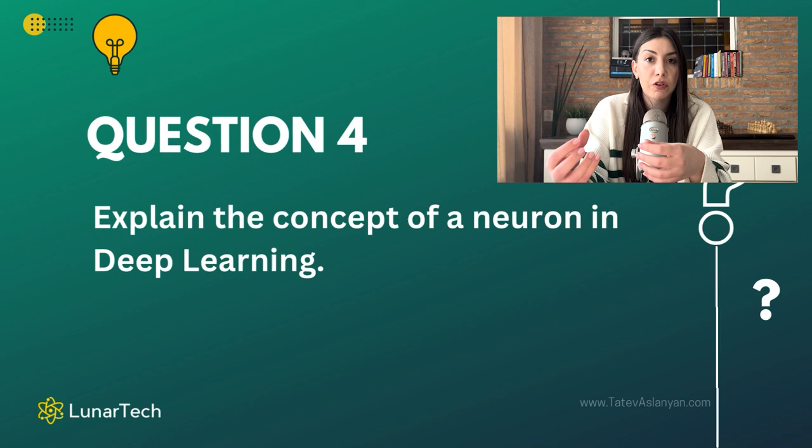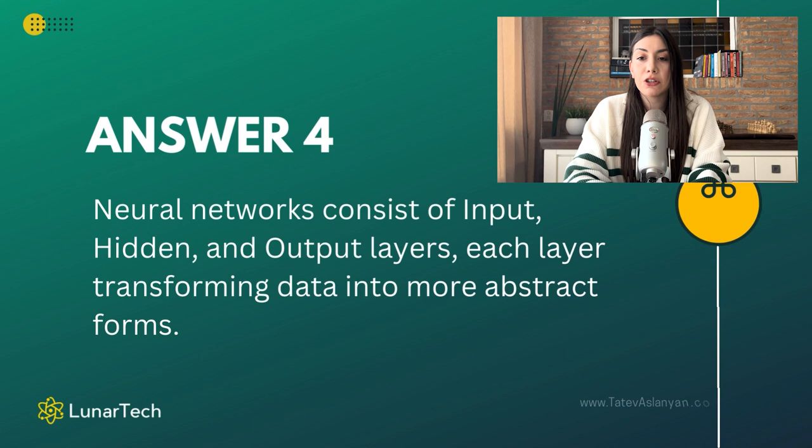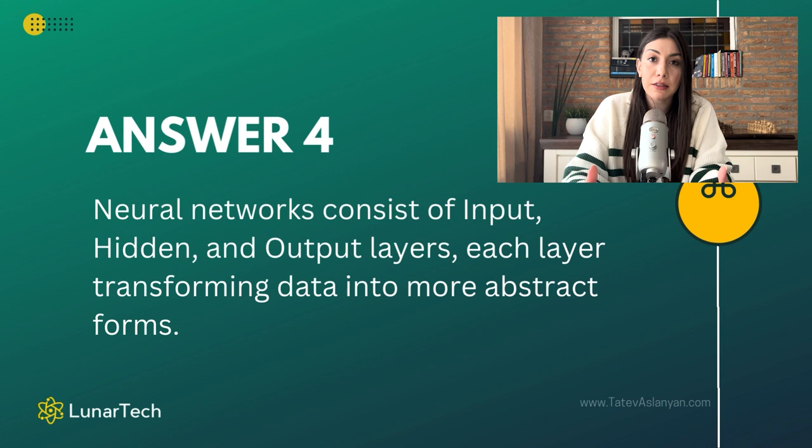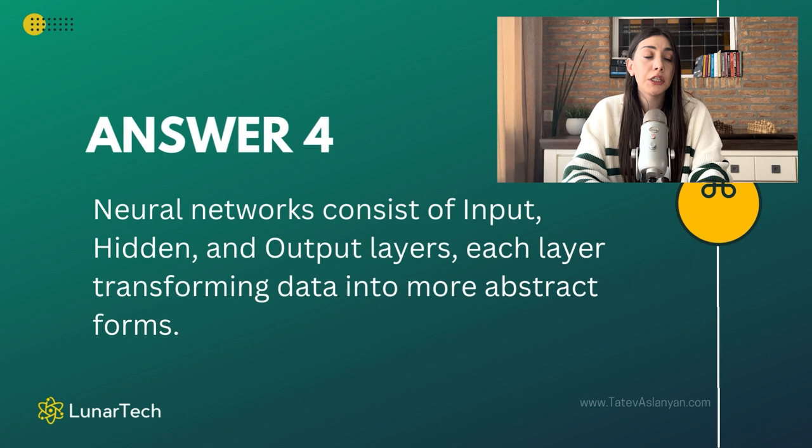So a neuron in deep learning, sometimes referred to as an artificial neuron, mimics the function of the human brain's neuron but it does so in an automatic and simple way. The idea is that in a neural network, the model gets different inputs and these input signals we are calling neurons.